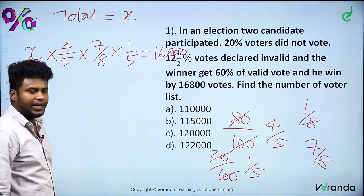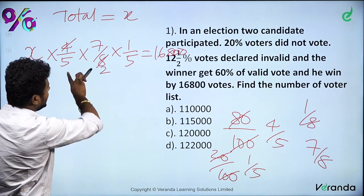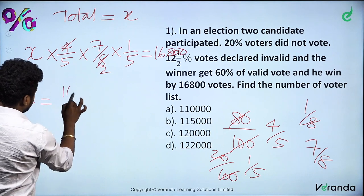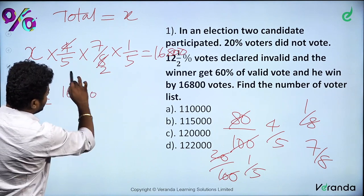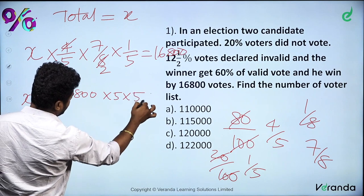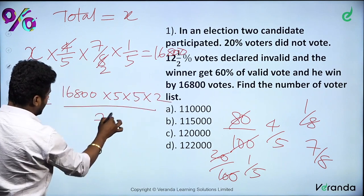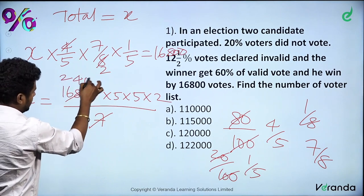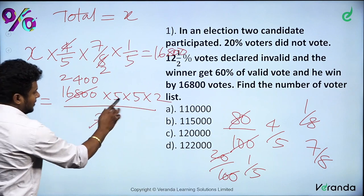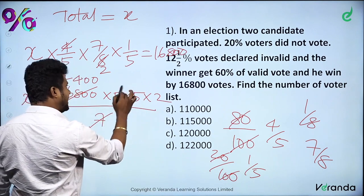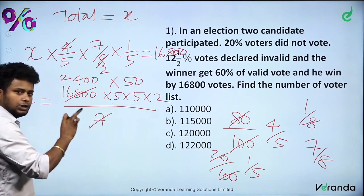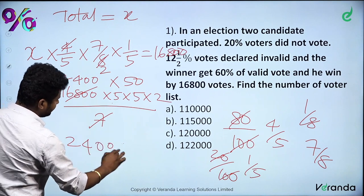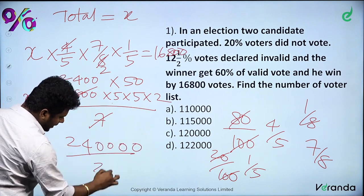So x × 4/5 × 7/8 × 1/5 = 16,800. Solving for x: multiply through. 5 × 5 = 25, times 2 = 50. Working out the numerator: 2 × 28 = 56 times some factor. After simplification, multiply by 50 — add two zeros then divide by 2 — giving x = 1,20,000.